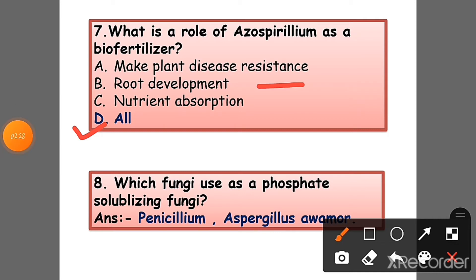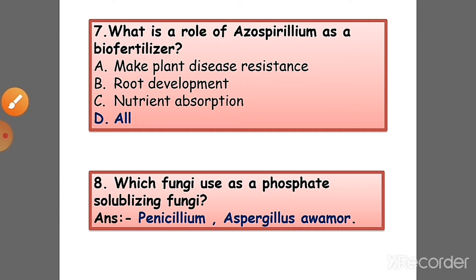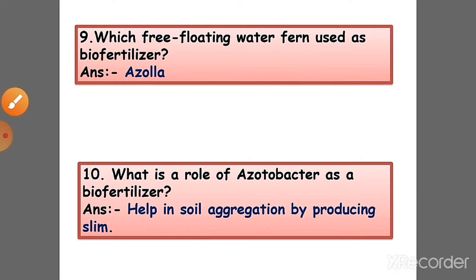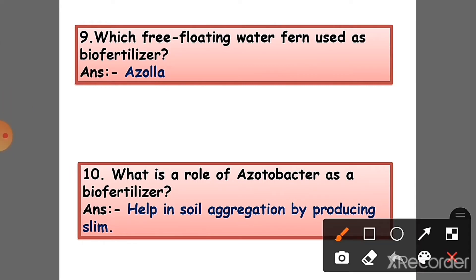Question 8: Which fungi are used as phosphate-solubilizing fungi? Answer: Penicillium and Aspergillus are used as phosphate-solubilizing fungi.